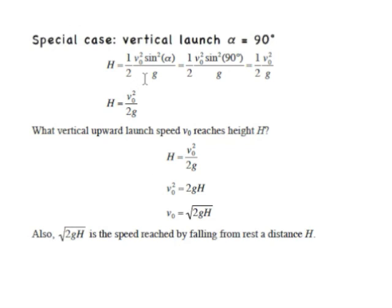So our H is going to be one-half V0 sine squared alpha over G, while our sine alpha is just sine of 90 degrees. Sine of 90 degrees is one, so this sine squared alpha term just becomes one and goes away, and all we're left with is one-half V0 squared over G.